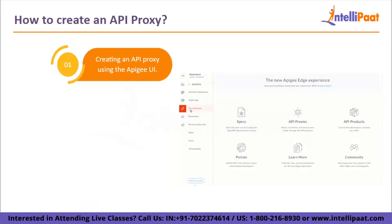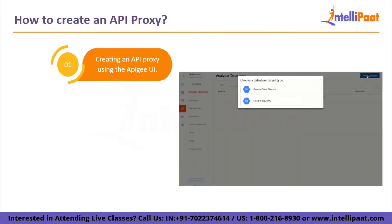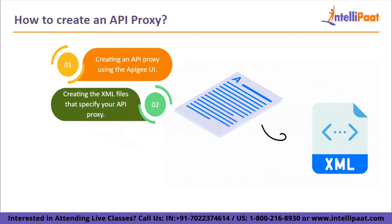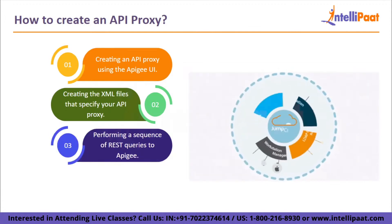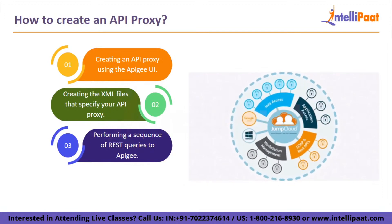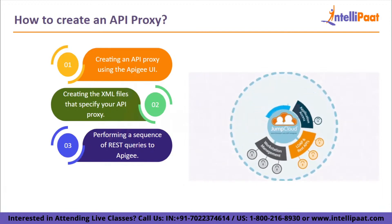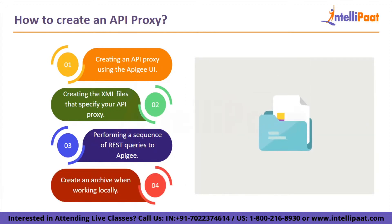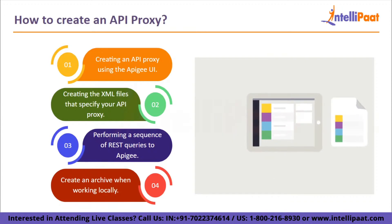Let's see how to create an API proxy. The first step is creating an API proxy using the Apigee UI in a graphical user interface. Next is creating the XML files that specify your API proxy, importing them into Apigee and adding any other supporting files. Thirdly, performing a sequence of REST queries to Apigee in order to construct your API proxies using the Apigee API. Lastly, create an archive when working locally with Apigee on Visual Studio Code.